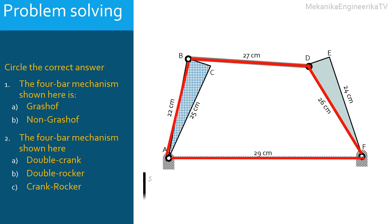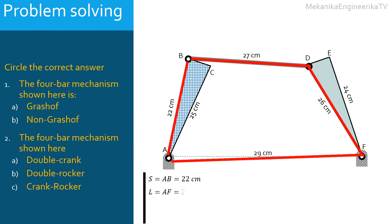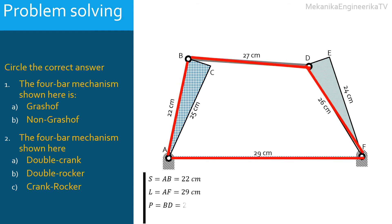Here the shortest link is AB having a length of 22 centimeters. The longest link is AF having a length of 29 centimeters. The two other links BD and DF are 27 centimeters and 26 centimeters long, respectively.